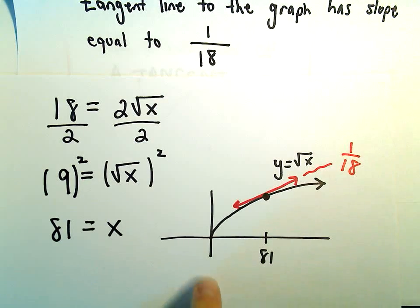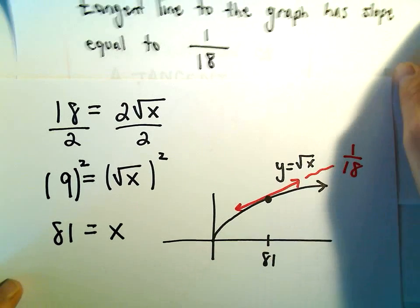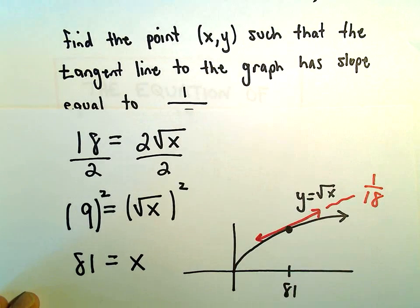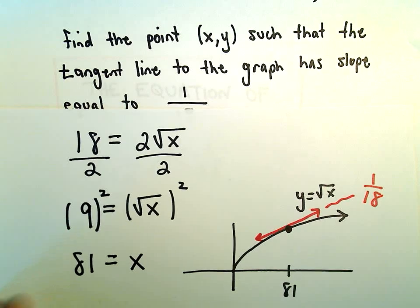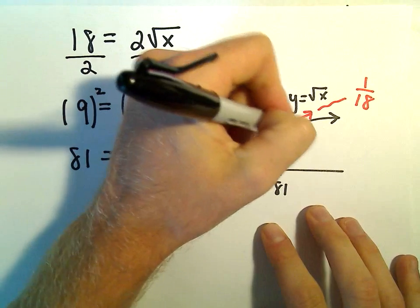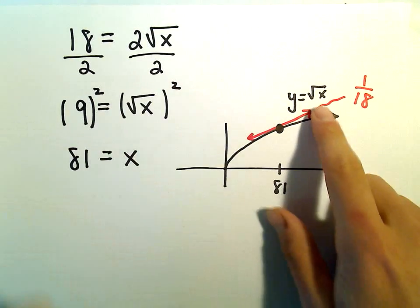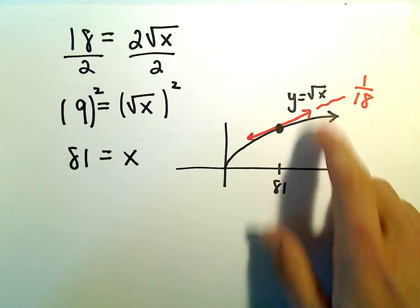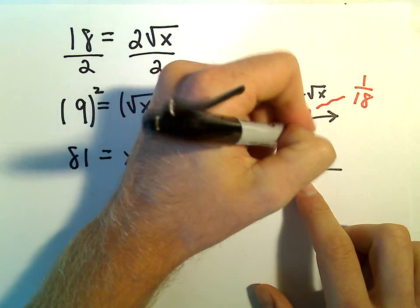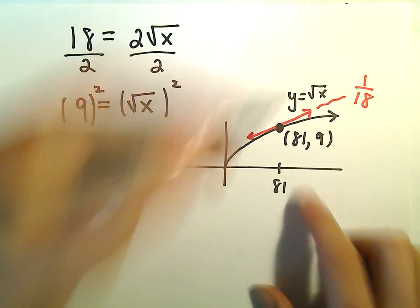Okay, so we're almost there. The question actually asks for the x and y-coordinate on the original function. If you plug 81 into the square root function, the square root of 81 is 9. So this point will be (81, 9).